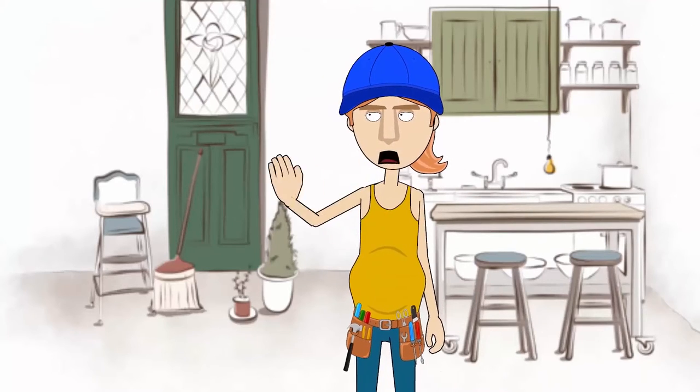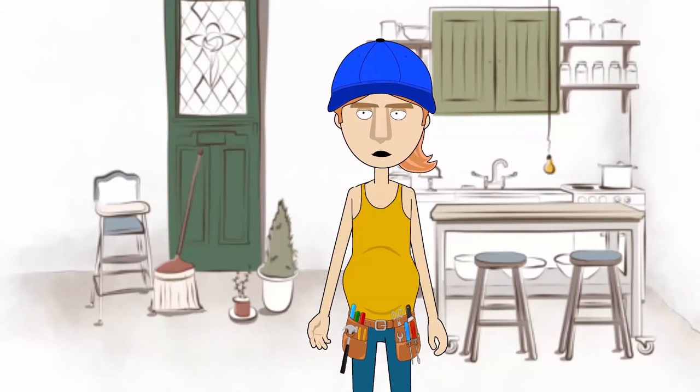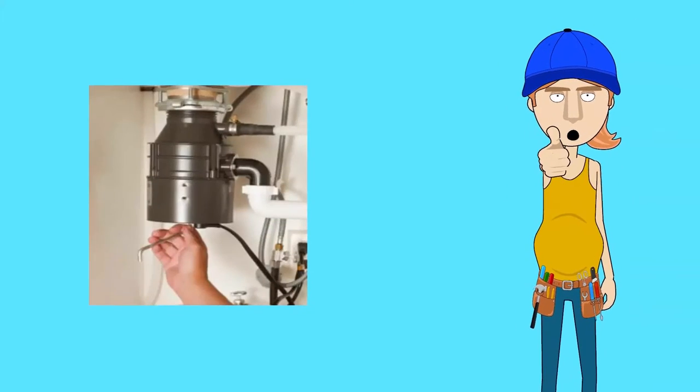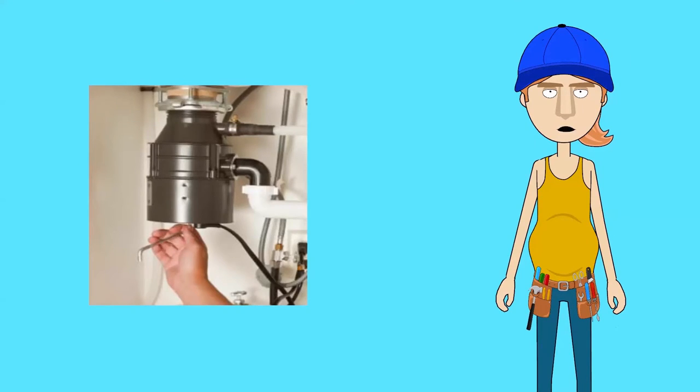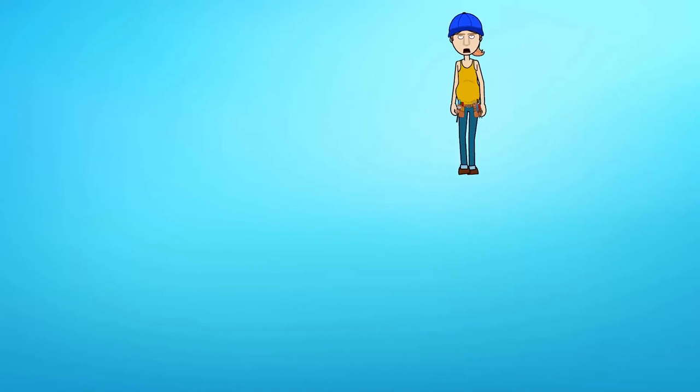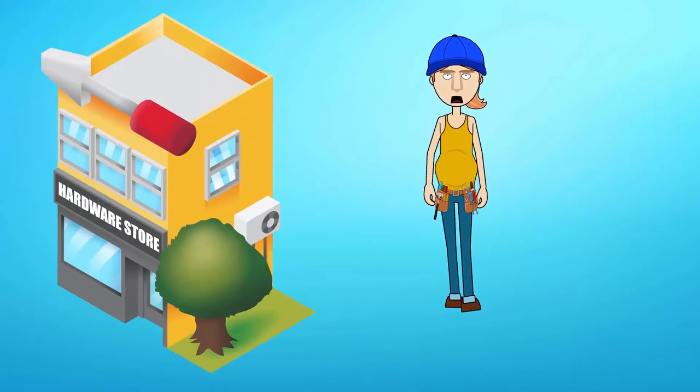If things are still not working, one final step before seeking assistance is using the L-shaped wrench under the sink often left by the installing plumber. If not, you can purchase one from most hardware stores.